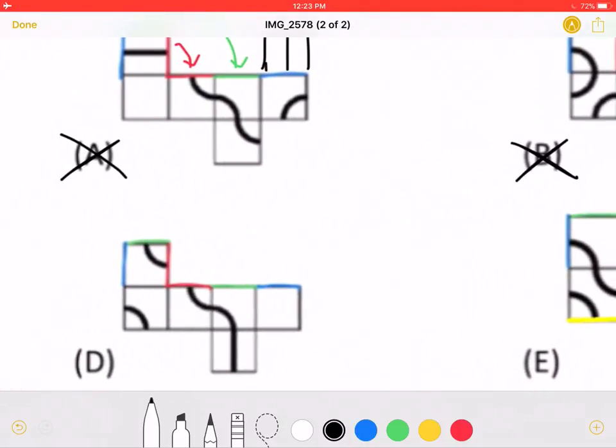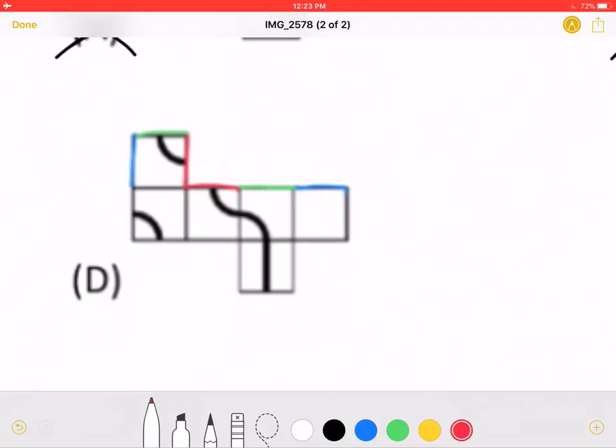Now let's look at D. Again, the red would come over here. As you can see, it would line up because this would match up with that, forming a path. But for the green, a little portion would come over here, which, as you can see, is not being connected with anything. So answer choice D is incorrect.